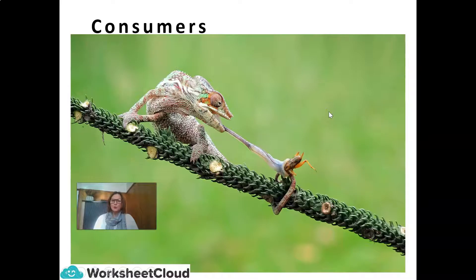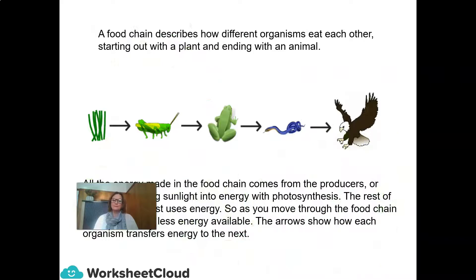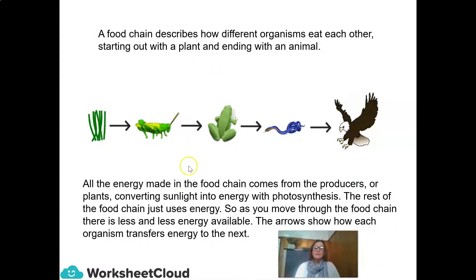Let's take a look at consumers. Consumers consume and eat other plants or animals. A consumer is also known as a heterotroph, which is an organism that cannot manufacture its own food, and therefore derives its intake of nutrition from other sources of organic carbon, mainly plant or animal matter. In the food chain, heterotrophs are secondary and tertiary consumers. A food chain describes how different organisms eat each other, starting out with a plant and ending with an animal. All the energy in the food chain comes from the producers or plants converting sunlight into energy with photosynthesis.